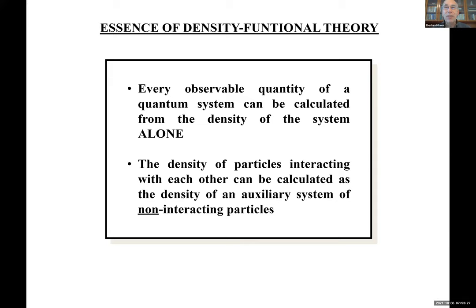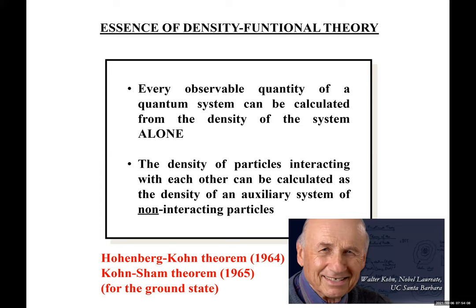The essence of density functional theory can be summarized in two well-known statements. First: every observable quantity of the quantum system can be calculated from the density alone, at least in principle. Second: the density of the interacting system can be calculated as the density of an auxiliary system of non-interacting particles moving in an effective potential. This is really the content of the Hohenberg-Kohn and Kohn-Sham theorems, for which Walter Kohn received the Nobel Prize in 1998.